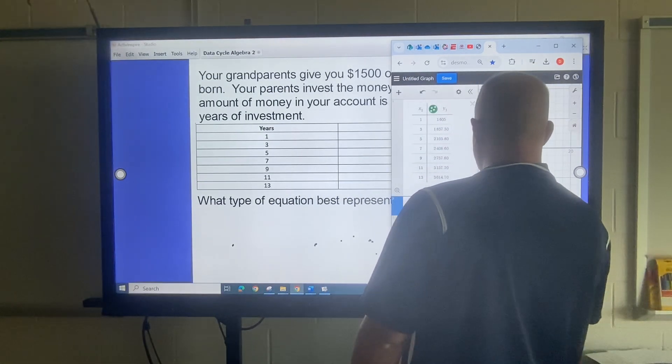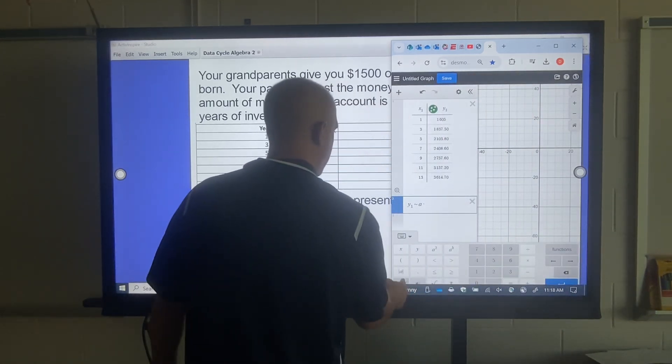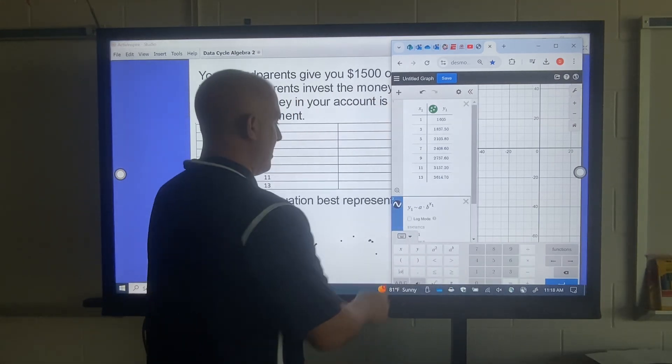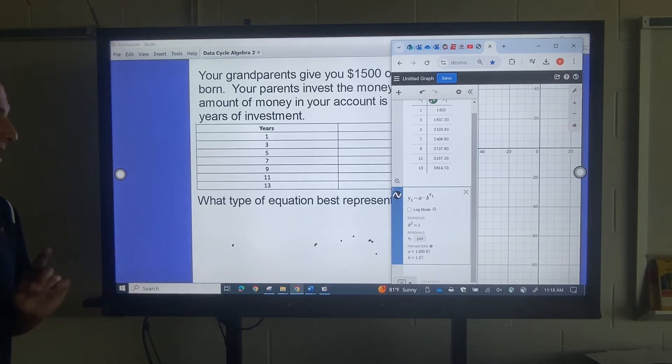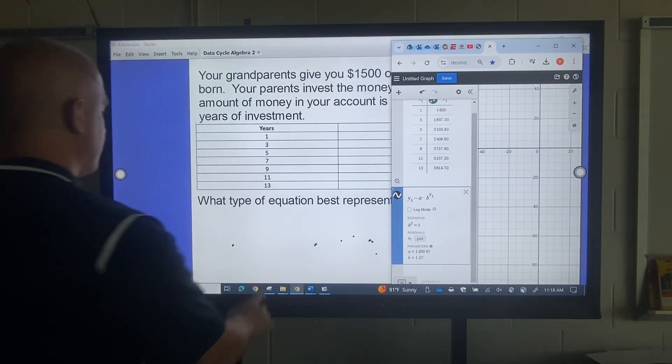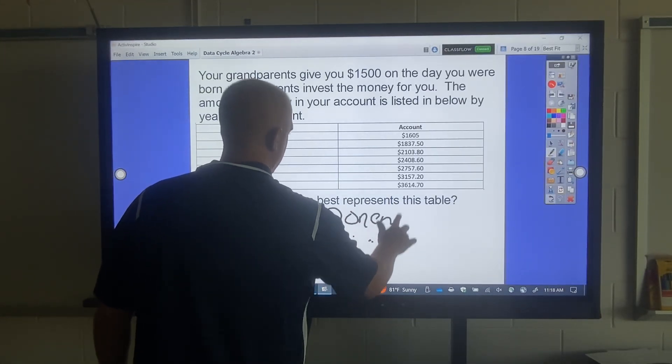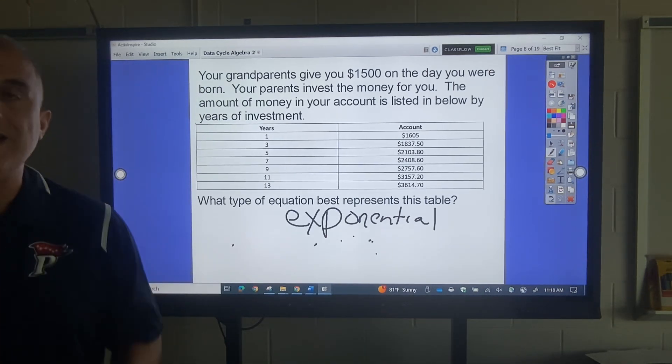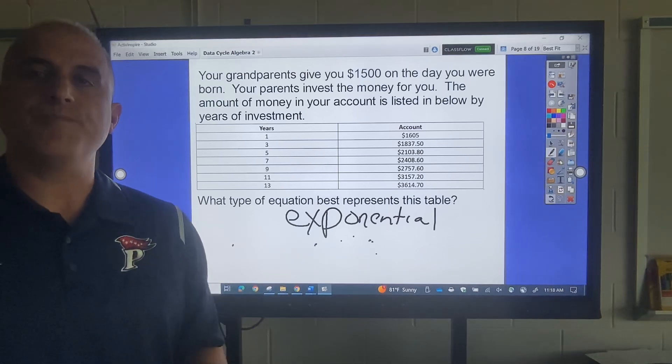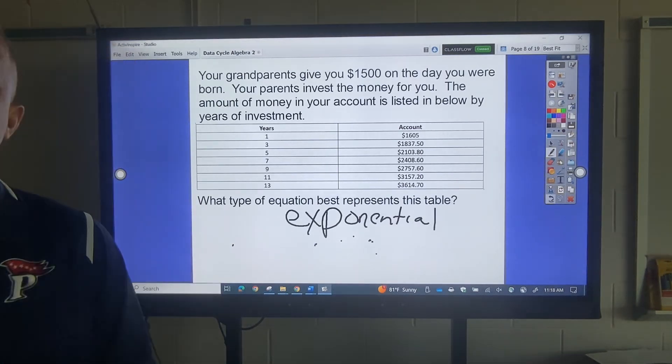Now, let's try the exponential one. Which the exponential one, you type A times B, make the exponent X1. Now, this one gives me an R squared value of exactly one. So, that's the one I want to use. So, this is an exponential. So, what I'm going to do is I'm going to pass out a couple for you to try. All we want to do is come up with what kind of function is it? Is it a line, is it a quadratic, or is it an exponential?